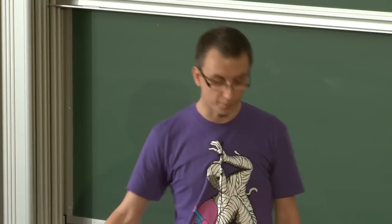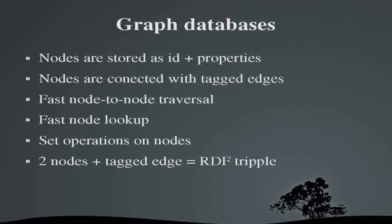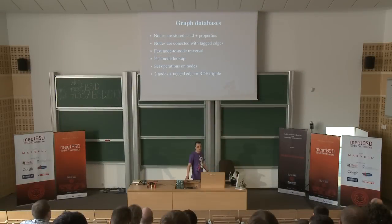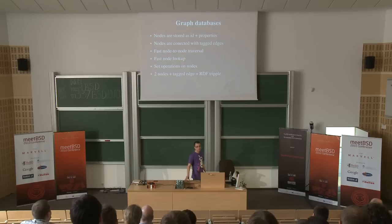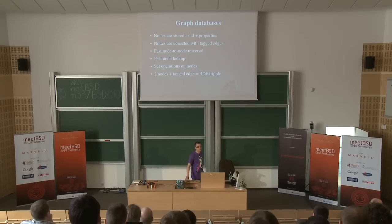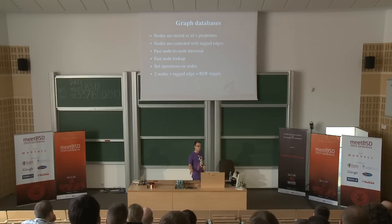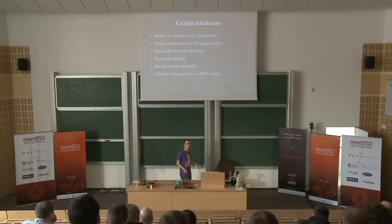Graph databases are pretty good technology for reasoning. Graphs are nodes and edges — we store nodes with their properties and connect them with tagged edges. HypergraphDB is a good example. There is fast node-to-node traversal and fast node lookup by name or property. There are set operations on nodes — find a group with a given property and another group, then perform a quick intersection. Two nodes and an edge is actually an RDF triple, so for example AllegroGraph treats the database as storage for RDF triples.